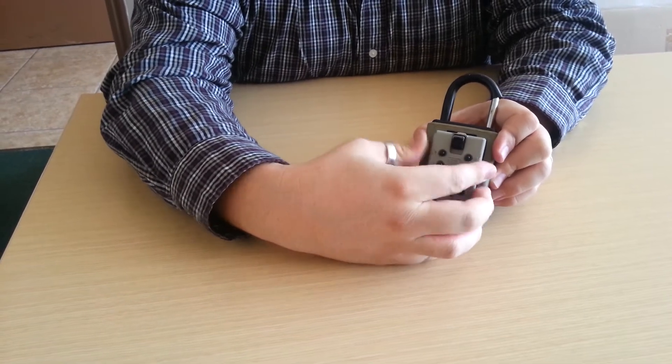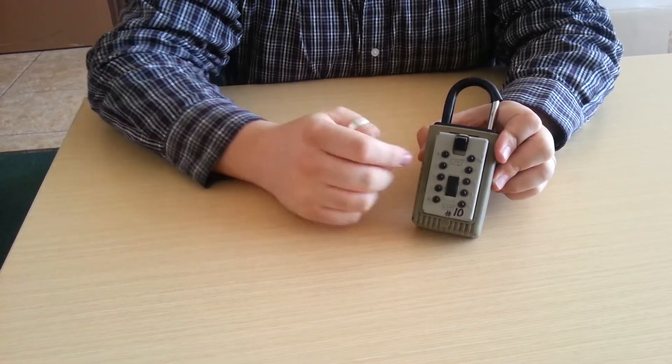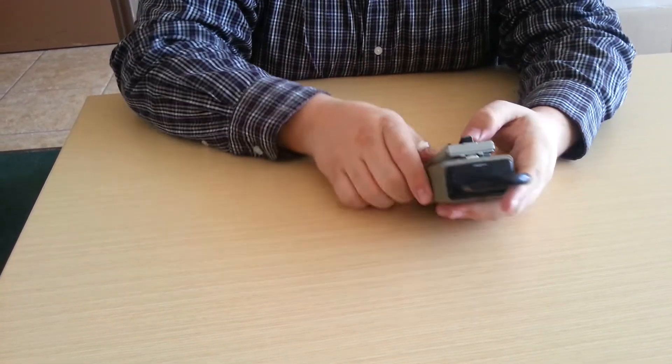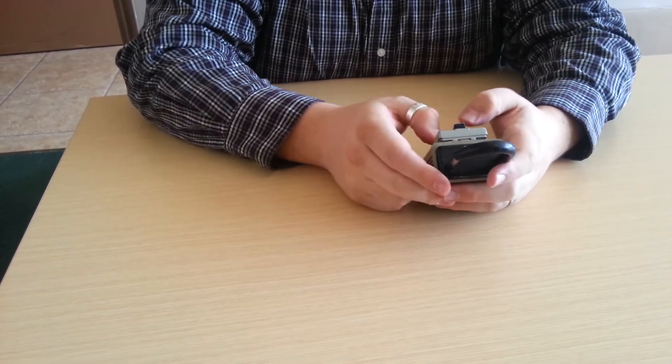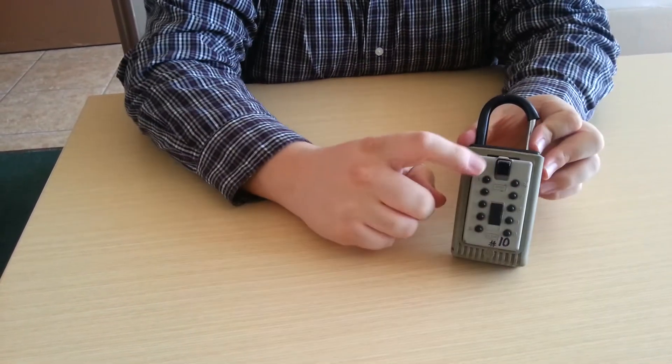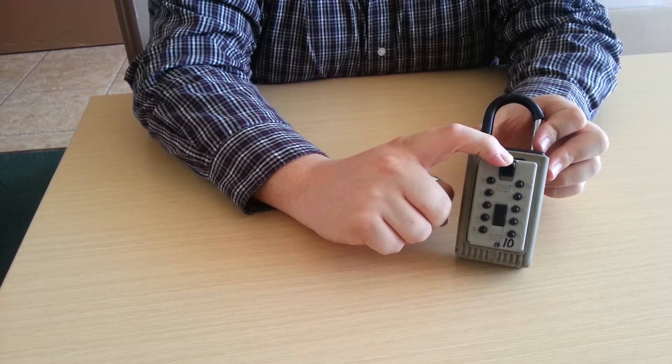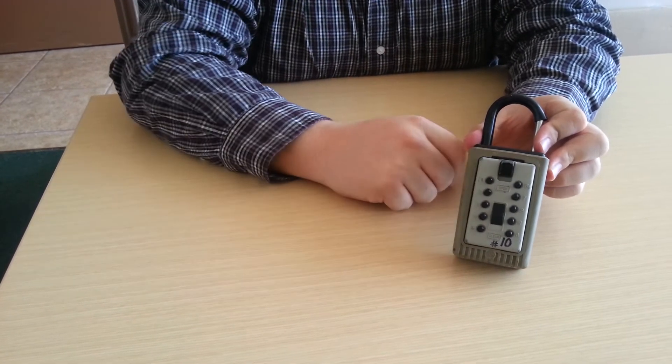And like I said, make sure the key's in there. Return the lid to this point and then input the same code again. Once the code is inputted, pull down on the same lever you used to open the lid and it will click down in.